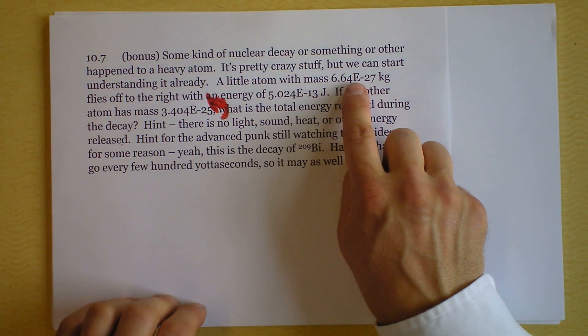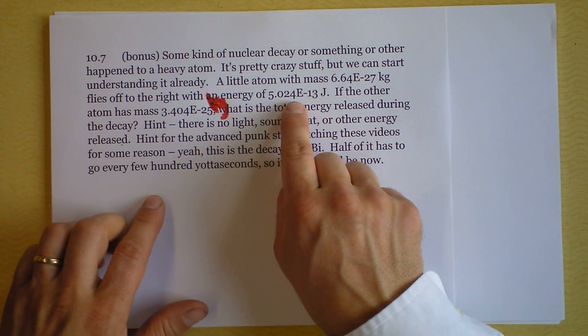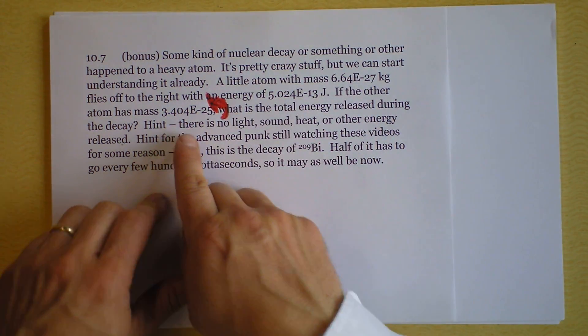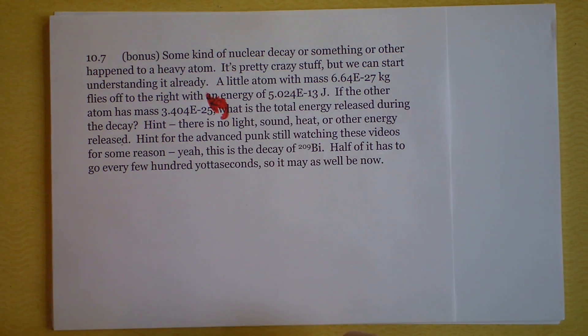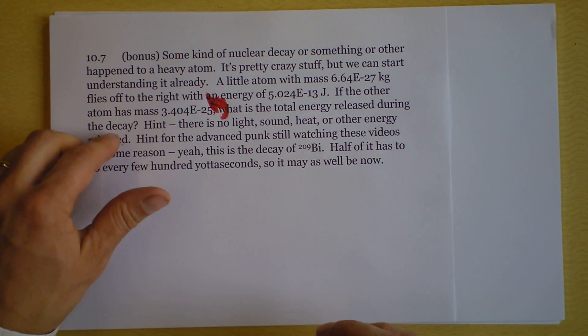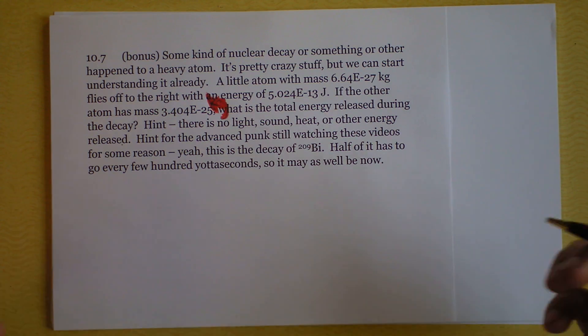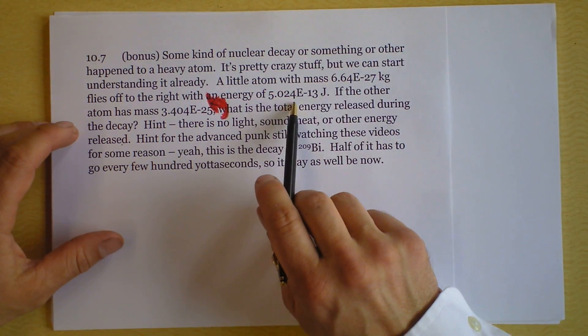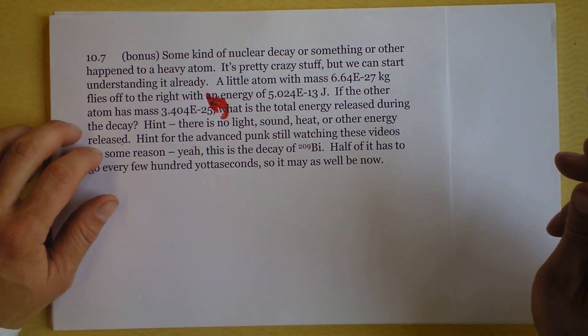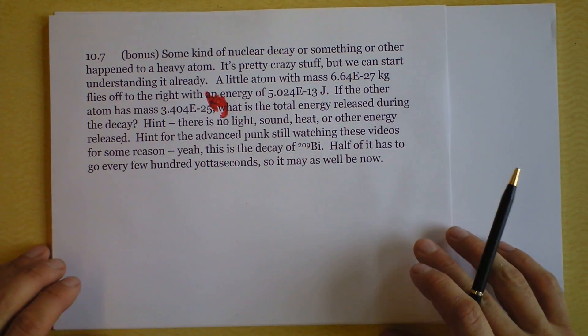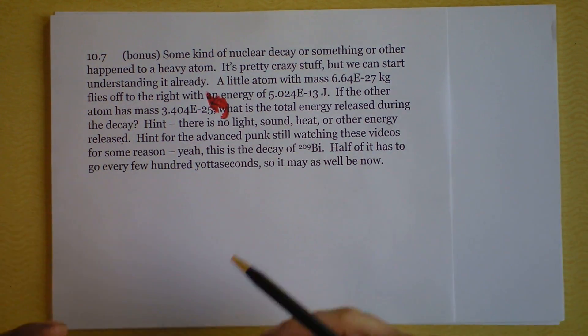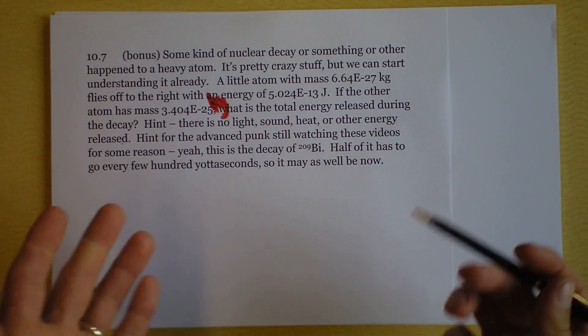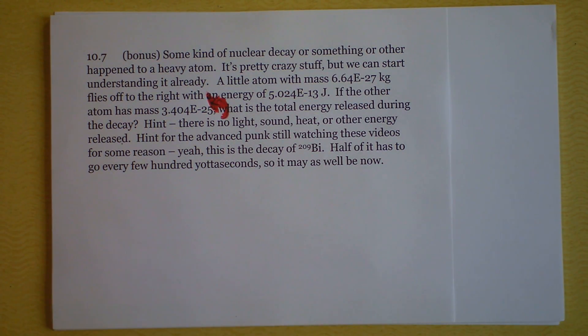And we're trying to figure out what's happening. Now, one of them is going to fly off to the right with this energy. So what does the other one do? Question mark. And then I'm asking about the total energy released during the decay. So this is cool because if you know the energy of one of them flying off and you know the mass of both of them, you can actually figure out how much energy you can harness by causing nuclear decay or by allowing nuclear decay and capturing that energy. And yeah, it's 209 bismuth.